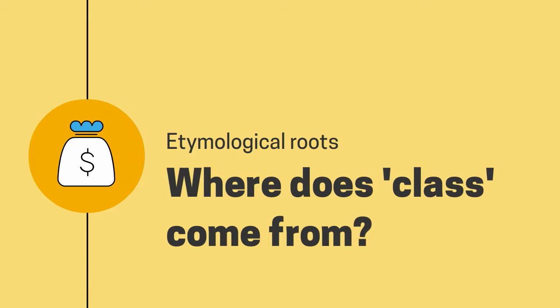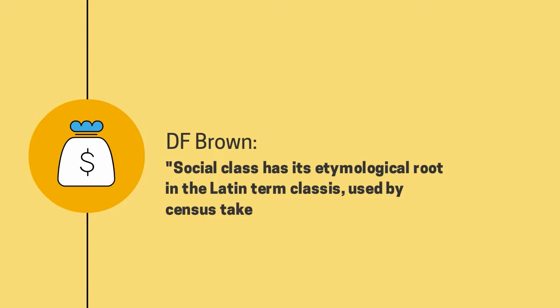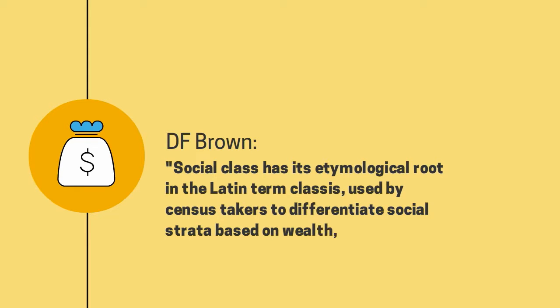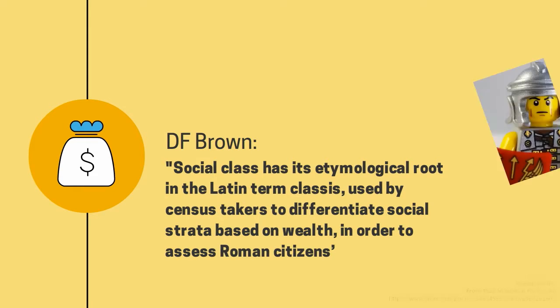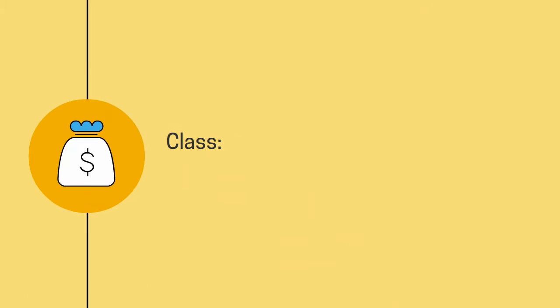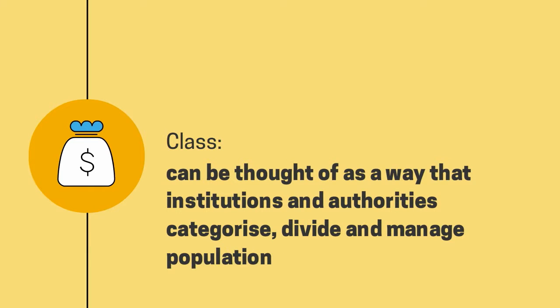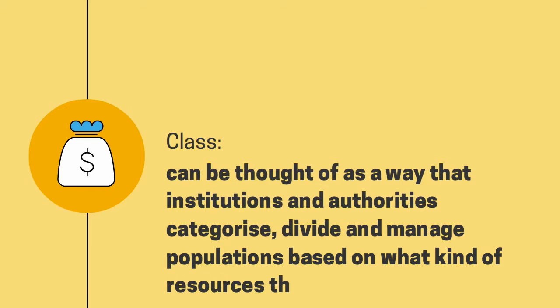A good way to get into the very big field of class and class studies is understanding where the word class itself comes from. Brown explains that social class has its etymological root in the Latin term classus, used by census takers to differentiate social strata based on wealth in order to assess Roman citizens' obligations to military service. So from the beginning, we can begin to conceptualise class as a way that institutions and authorities categorise, divide and manage populations based on what kind of resources they have.